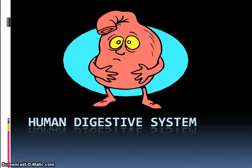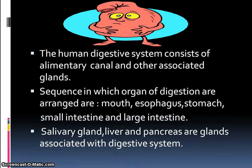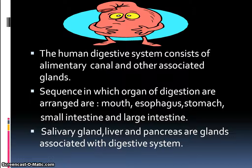The human digestive system consists of the alimentary canal and other associated glands. The organs of digestion are arranged in this sequence: mouth, esophagus, stomach, small intestine, and large intestine. Salivary glands, liver, and pancreas are the glands associated with the digestive system.